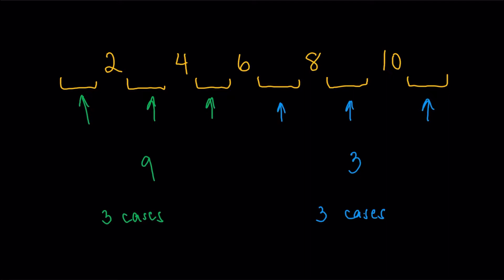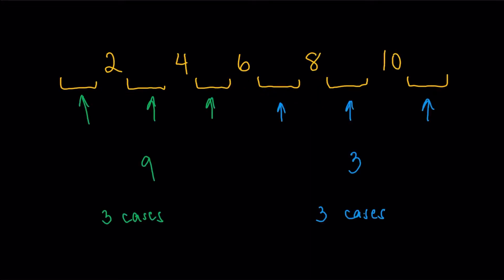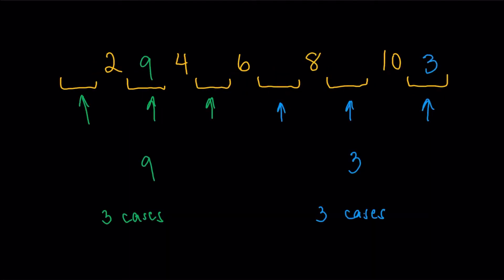Now, for the remaining three numbers, the 1, 5, and 7, which don't have any restrictions, they're just going to be placed somewhere. So let's just say we have this. Let's just say I put the 9 between the 2 and the 4 here. And then let's just say I decided to put the 3 after the 10. So somewhere here.